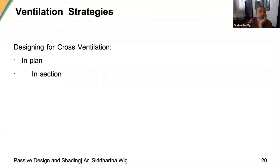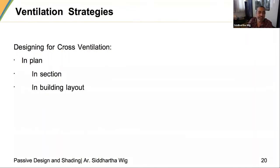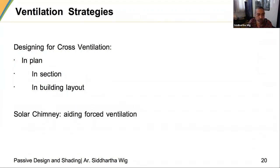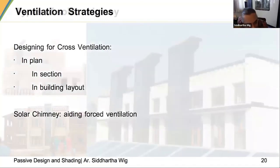I look at the Trombe wall in detail because I want to get into the detail of solar chimneys also — how cross ventilation can be done using them, in plan, in section and in building layout. I am not going into these in detail here as your self-learning modules and subsequent lectures will cover them. I want to look at a solar chimney and see how it can help in aiding forced ventilation.